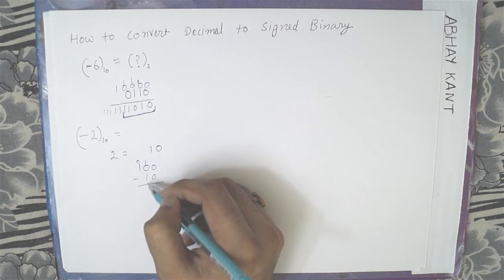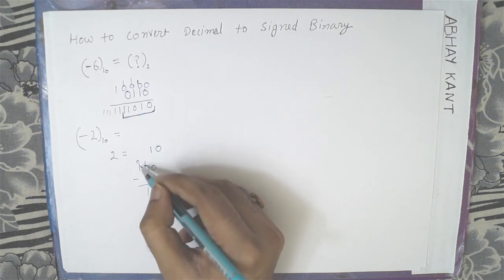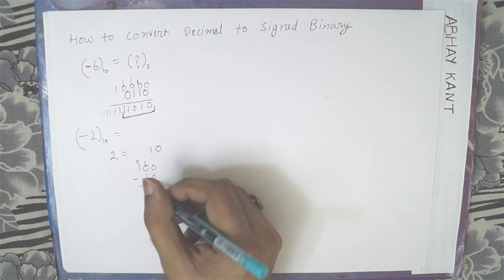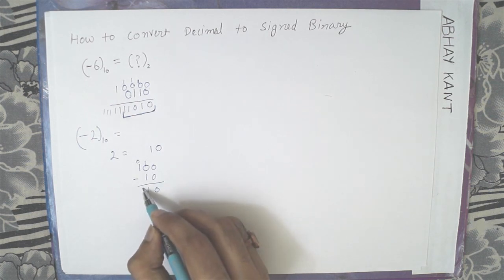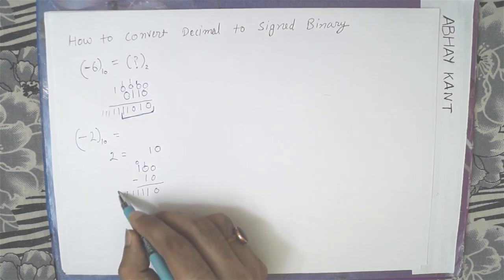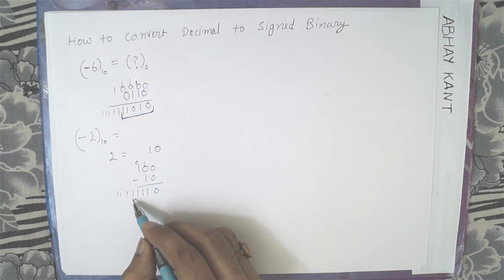So 2 minus 1 is 1, and this is, this is 0. So this is negative 2. We can write as many 1 as we want. Since this is a 5 bit number, we are calculating in 5 bit. So we take 1, 2, 3, 4, 5.